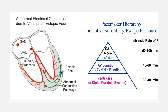All junctional tissues are capable of generating impulses — for example, the SA node, AV node, bundle of His, and Purkinje fibers. All of them can generate impulses as they are junctional tissues. There is a phenomenon known as pacemaker hierarchy.